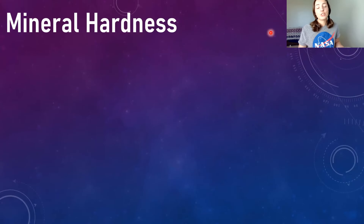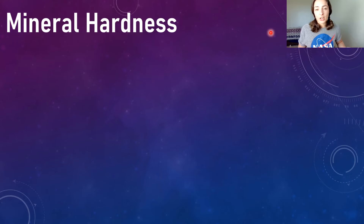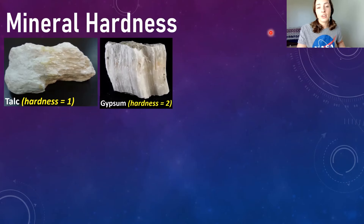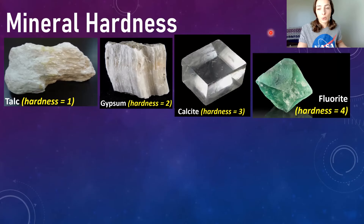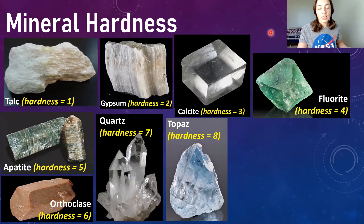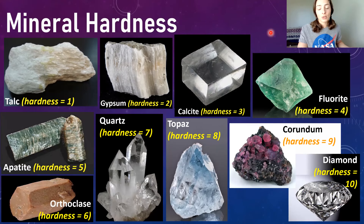Now moving to mineral hardness, another really diagnostic feature for identifying minerals. On the Mohs hardness scale: talc is number one (least hard), gypsum is two, calcite three, fluorite four, apatite five, orthoclase six, quartz seven, topaz eight, corundum nine, and diamond is the hardest at ten.